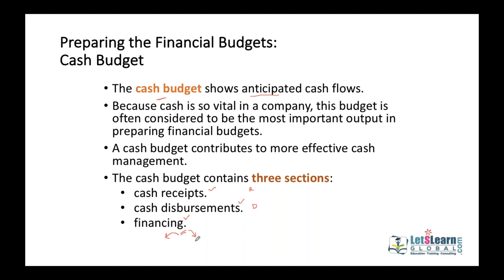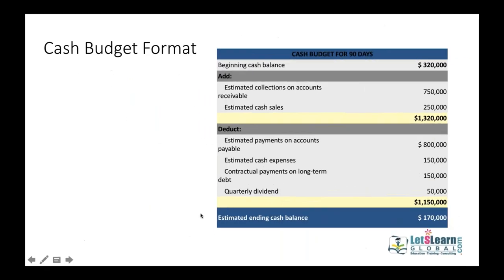The format of a cash budget starts with the beginning balance, then adds all forecasted collections itemized — not just a grand total, but itemized amounts such as cash sales, collections from receivables, sale of assets, sale of investments, and dividends received.